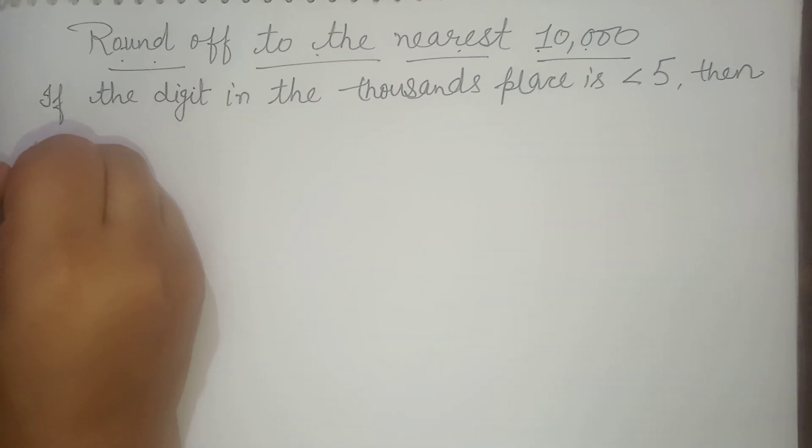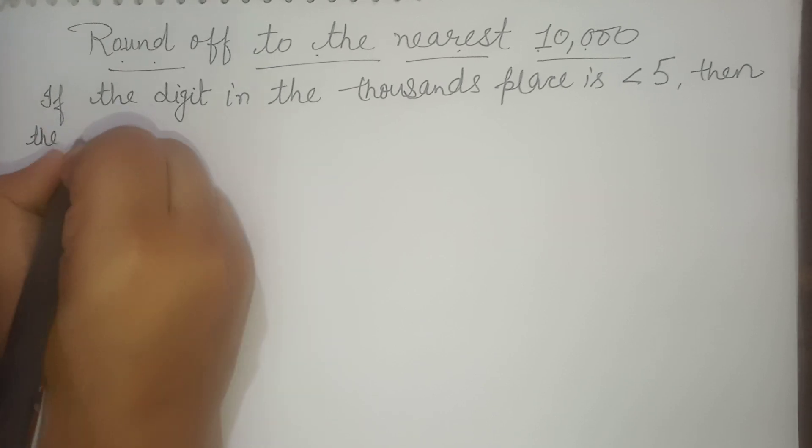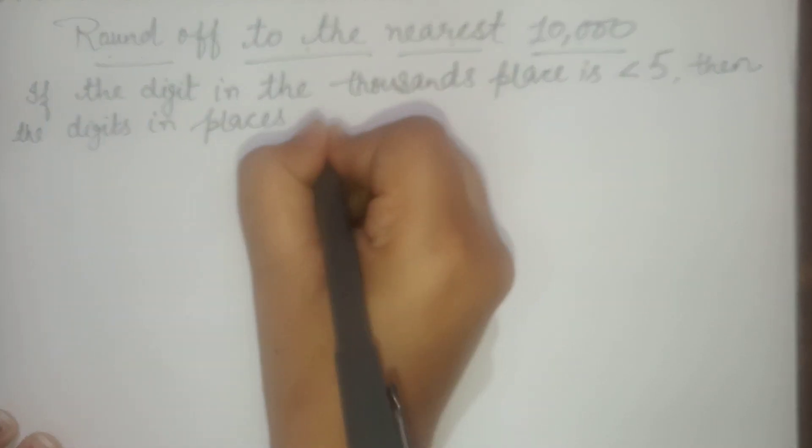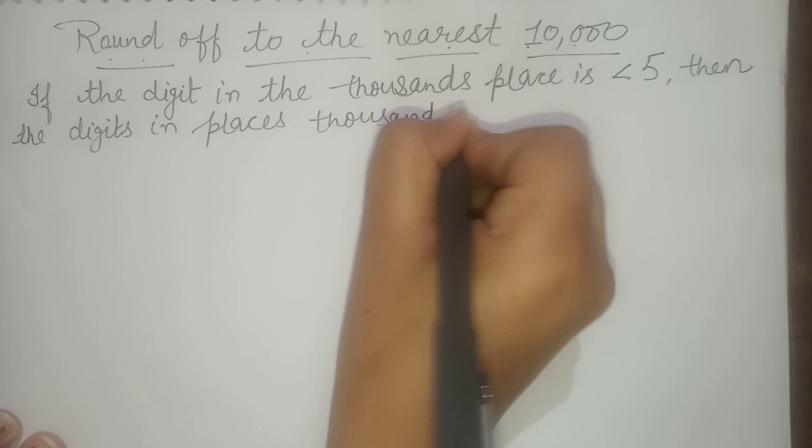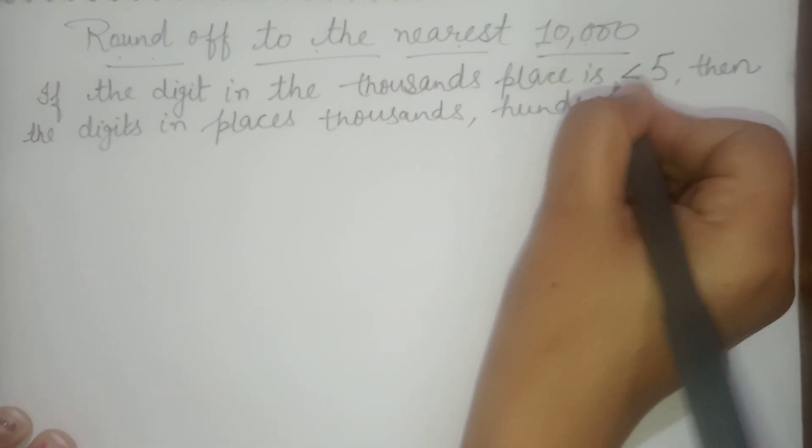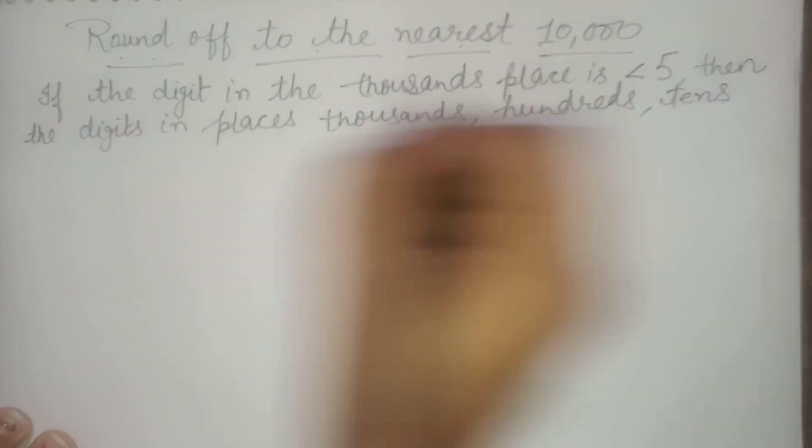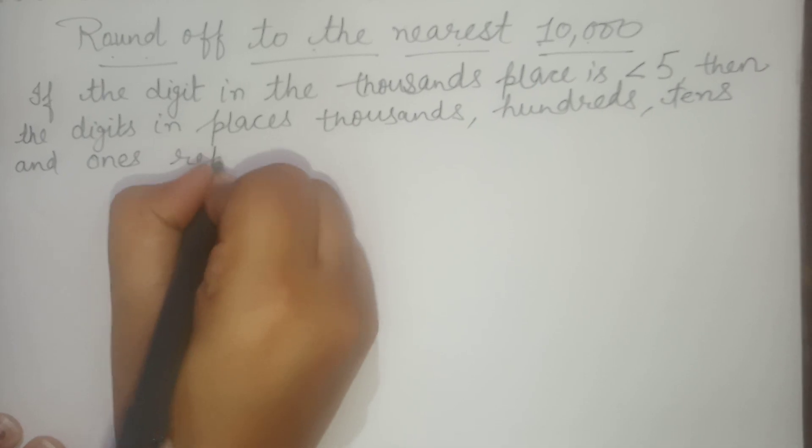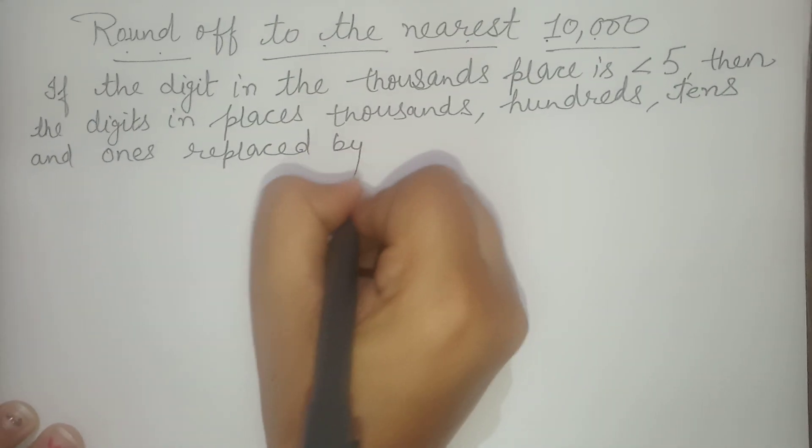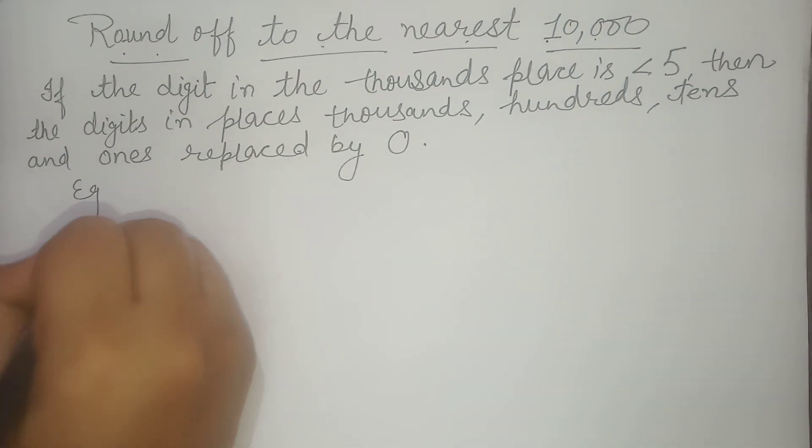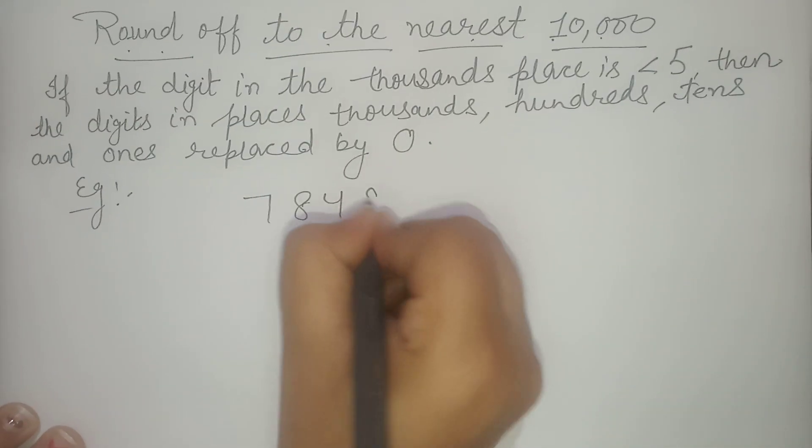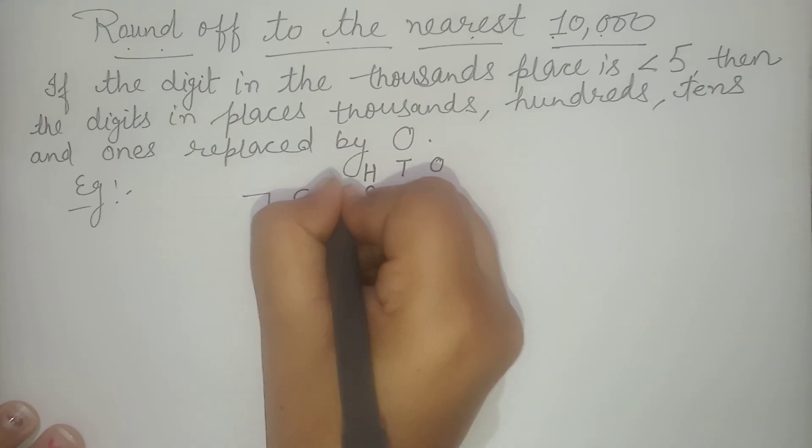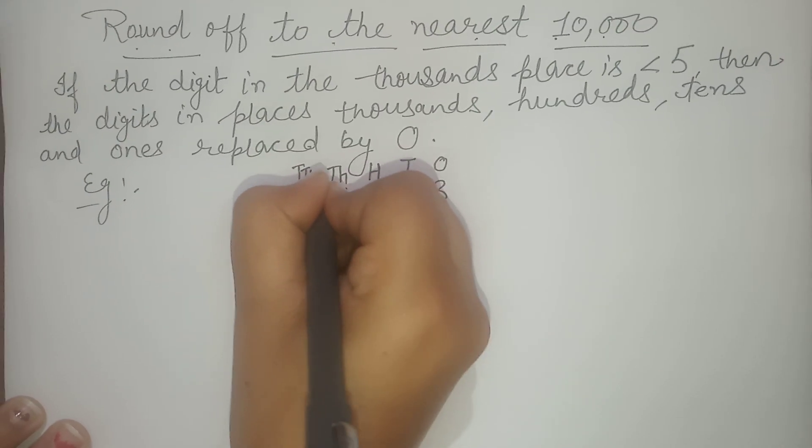The digits in the places thousands, hundreds, tens and ones will be replaced by zero. I'm taking one example here. Suppose I write: ones, tens, hundreds, thousands, ten thousands, lakhs.